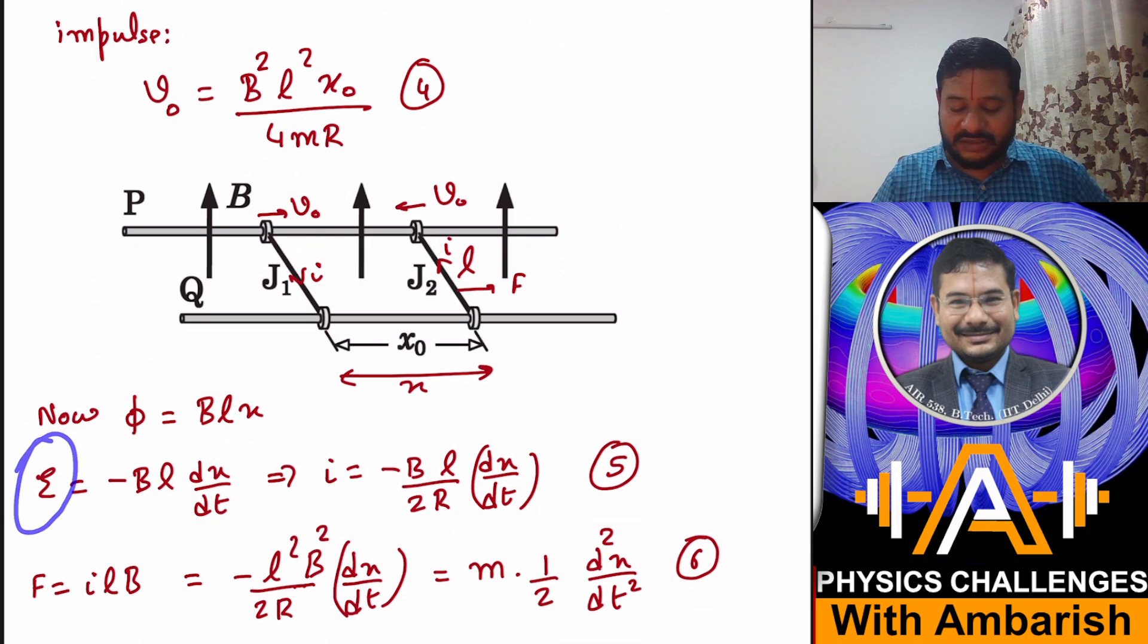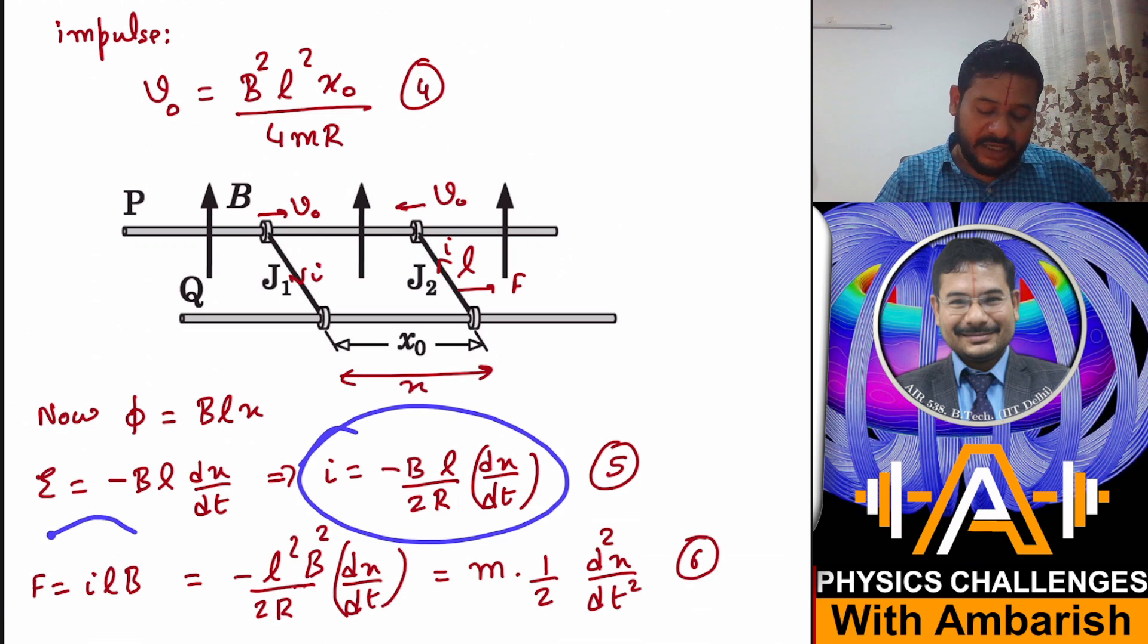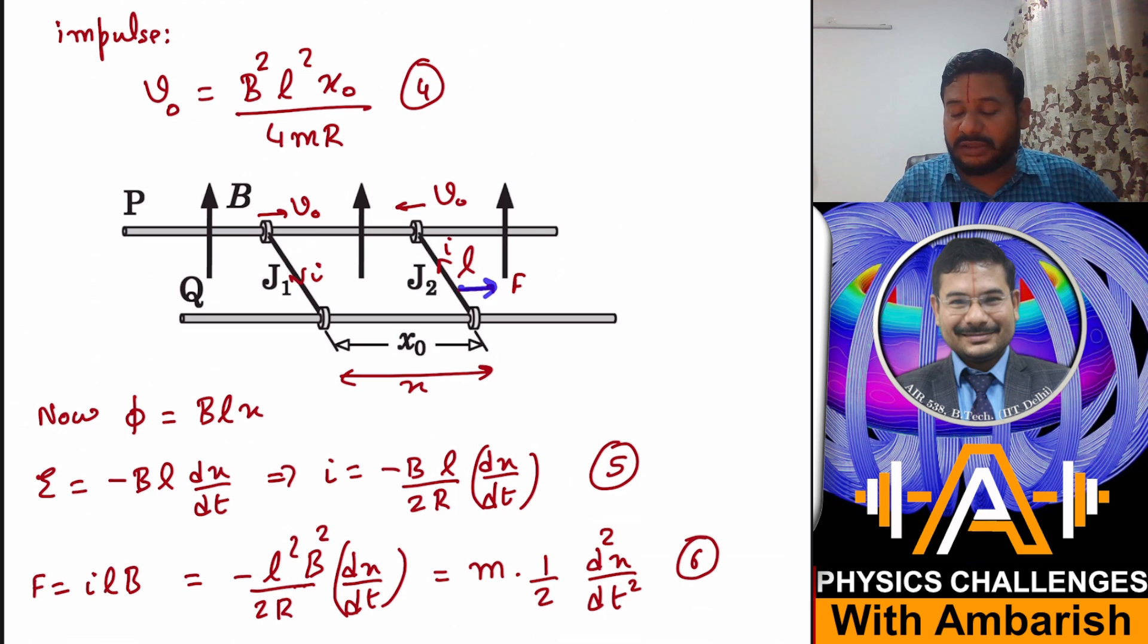And then current again, EMF divided by resistance, so this becomes minus B·l/(2R) into dx/dt - just divided this by the resistance of the loop which is 2R. So the EMF, and from EMF I get current, and from current multiply another lB, so this becomes your force.